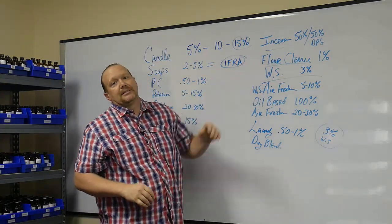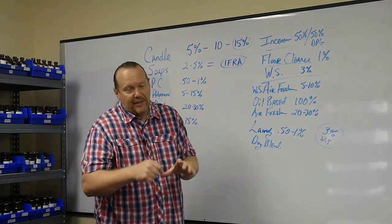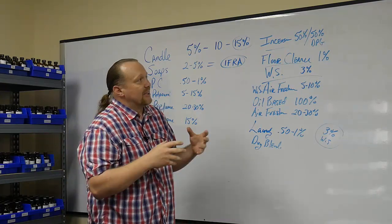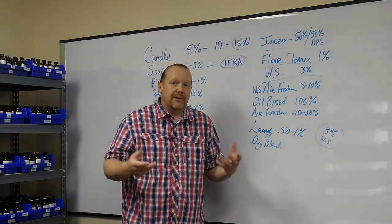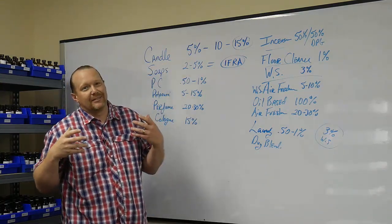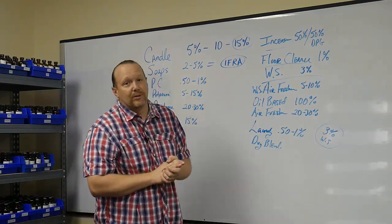Incense. Incense is mixed 50% DPG, 50% fragrance. Those are mixed together and then dipped with the incense punks. It's going to be as much will absorb into the incense. Some people double dip them. They'll hang them up, dry them, dip them a second time. So there's not really a straight limit or threshold of how much can be used. It's just as much as will be absorbed into the product.